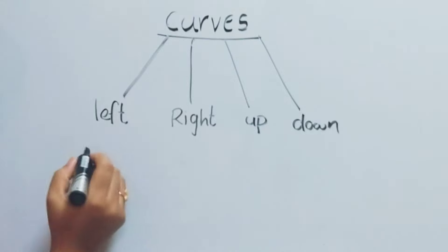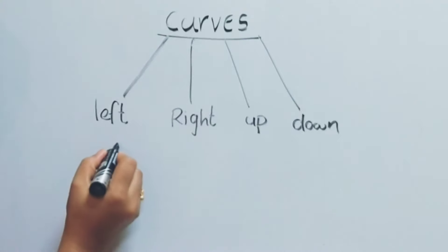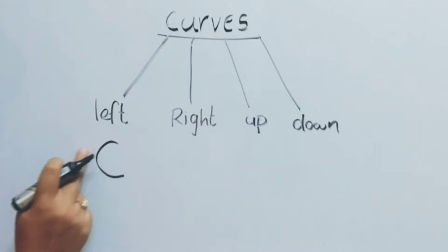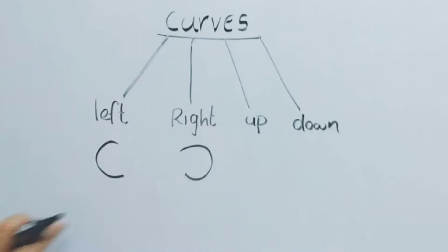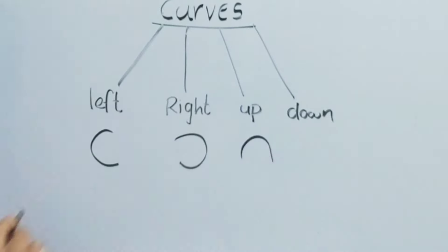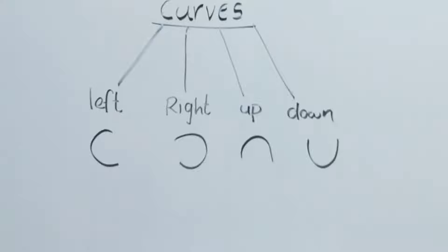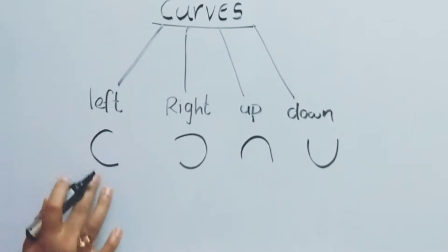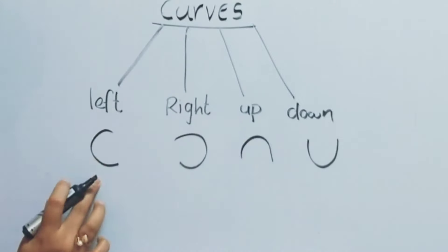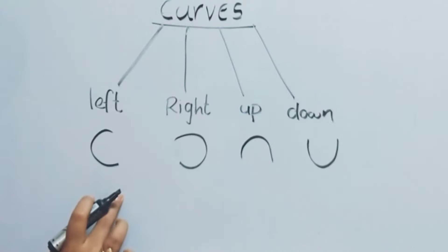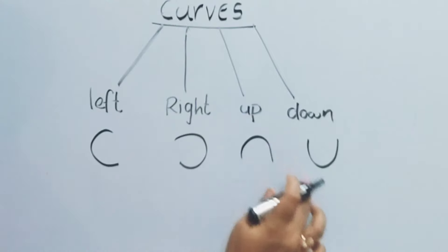Four curves: left, right, up, and down. First, left curve — a line bent to the left side. Then right curve — a line bent to the right side. Then up curve — a line bent to the upside. And down curve — a line bent to down. Left side curve, right side curve, up curve and down curve.